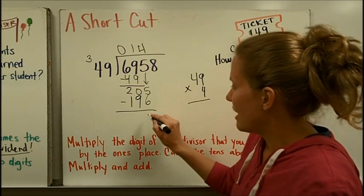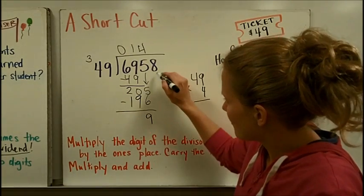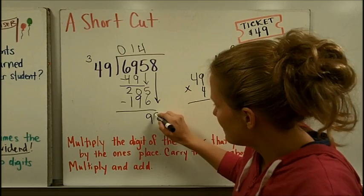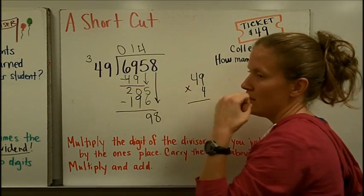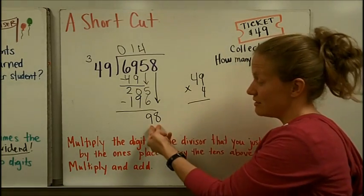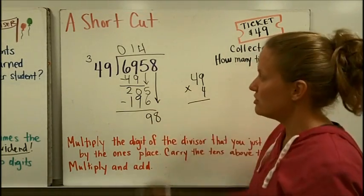And then when I subtract, I would get 9. I'm going to bring down the 8. And then I can think that 49, that's about 50, close to 100. This is close to 100. I'm going to try 2.